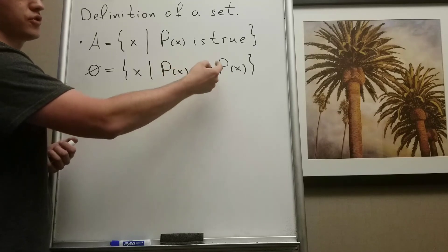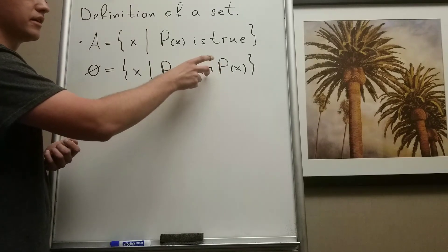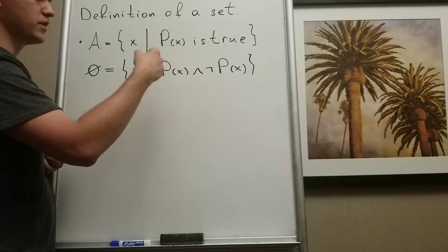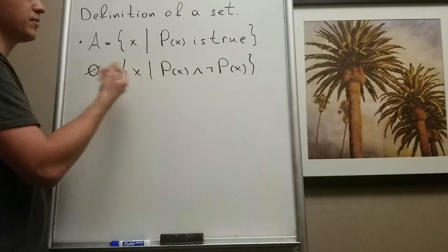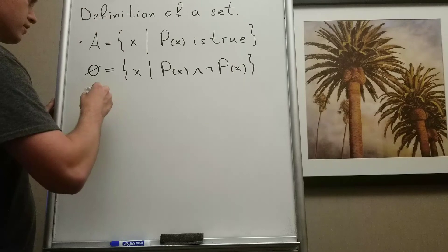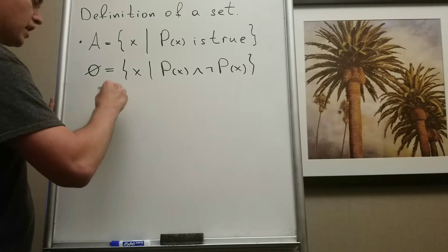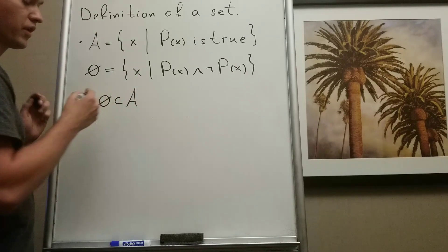So the logical AND will make this false. But if P of X is false, negation is going to be true, and again the logical AND will give us false. So we don't have any elements in the empty set. And like I did in another video, I showed that the empty set is actually a subset of any set.